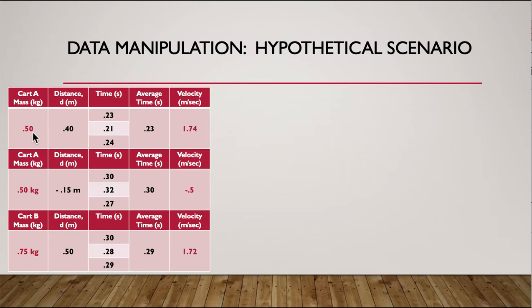But the important thing is we have the mass of cart A. This number doesn't change. Before and after the collision, cart A is cart A. Then we have the mass of cart B down here. We don't need cart B before the collision because we know that the velocity is zero. So we just need cart B after the collision, which is what all this is down here.